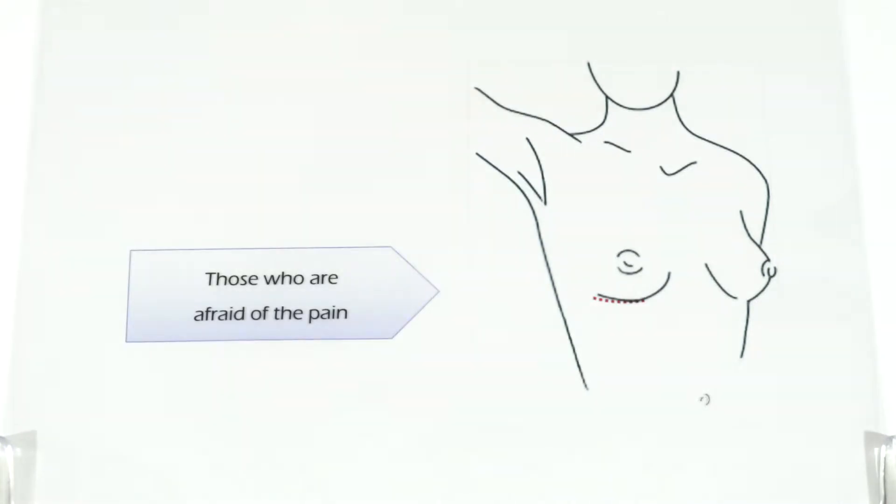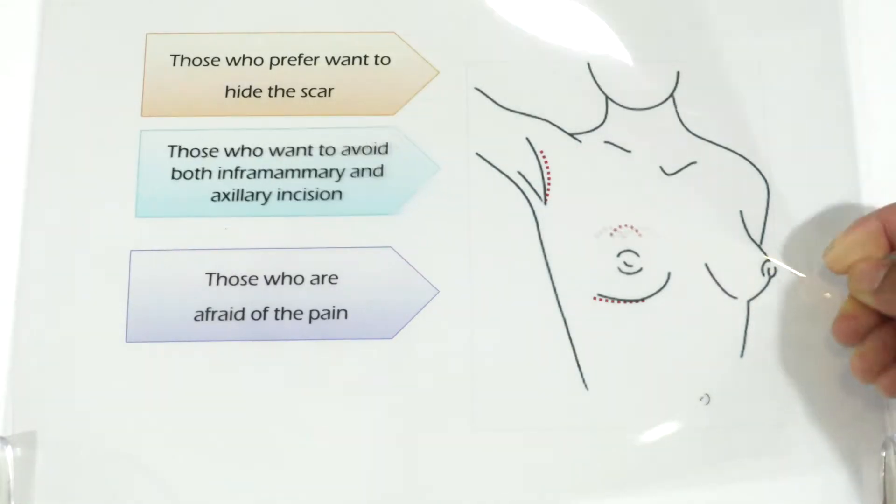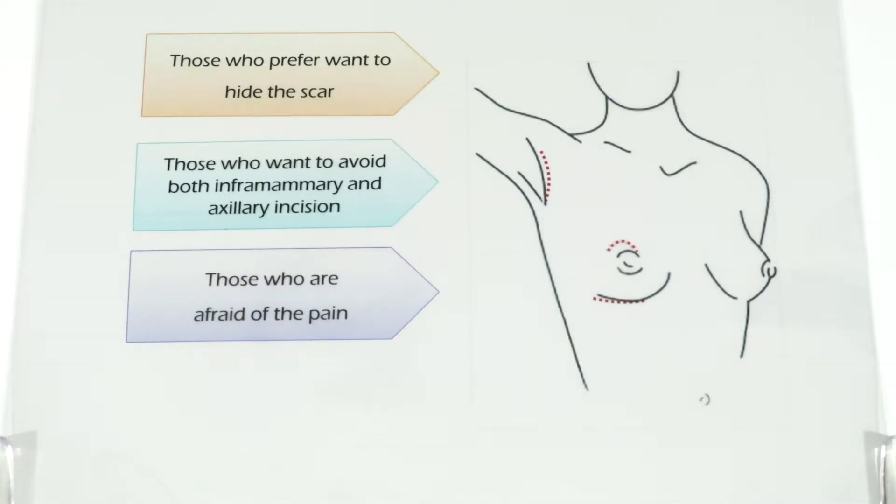Those who prefer inframammary do so because they are afraid of the pain. Those who prefer the axillary do so because they want to hide the scar that may be caused. Those who prefer periareolar do so because they want to avoid both the inframammary and axillary incision. TUBA is selected because the patients want the incision to be done at a spot that is far from the breast.